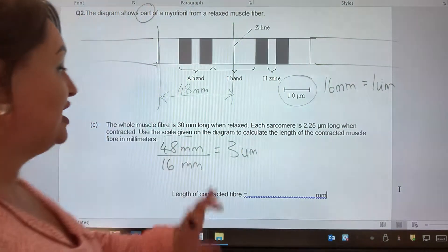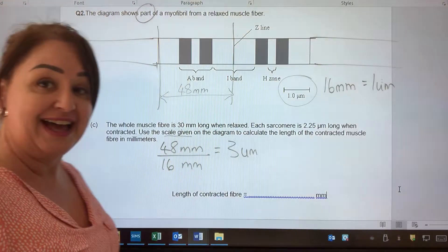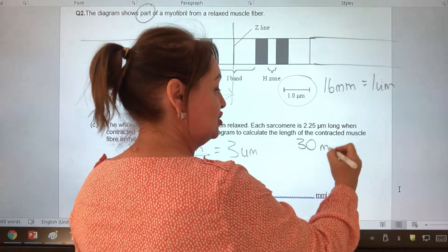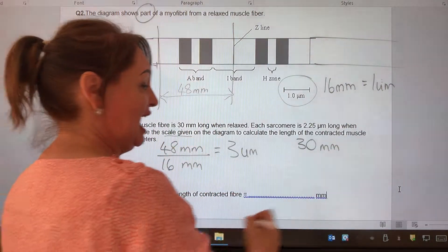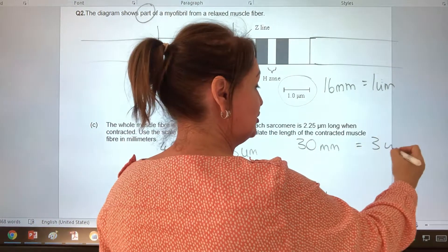Now the question is saying that the whole muscle fiber is 30 millimeters long. Well, now I can just scale this, because 30 millimeters and each sarcomere is 3 micrometers.